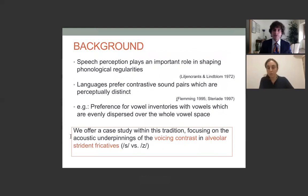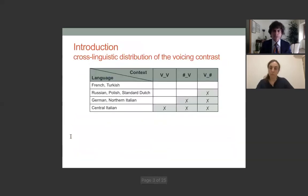Speech perception plays an important role in shaping phonological regularities. Languages prefer contrastive sound pairs which are as perceptually distinct as possible. Just to give you an example, there is a cross-linguistic preference for vowel inventories to display vowels that are as evenly dispersed throughout the whole vowel space as possible. What we did was offer a case study within this tradition, focusing on the acoustic underpinnings of the voicing contrast in alveolar strident fricatives.